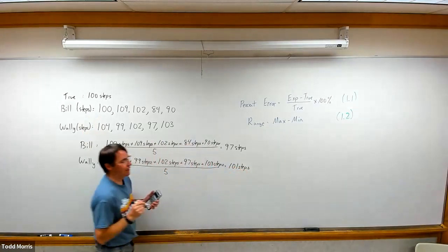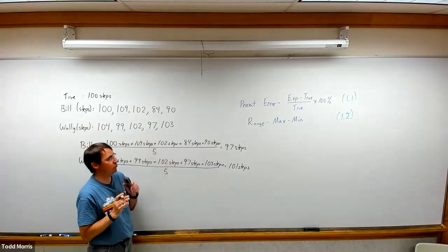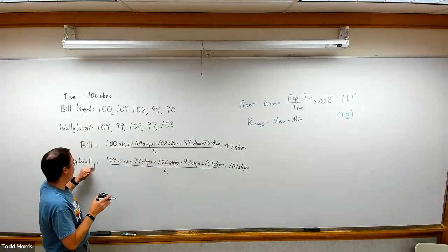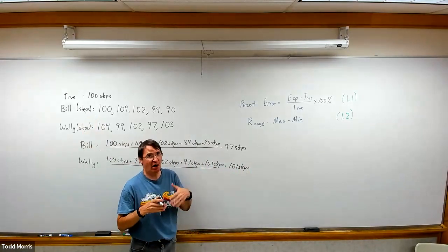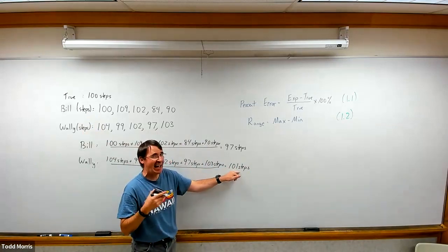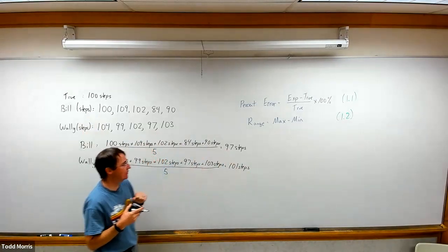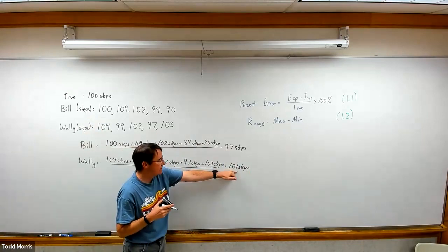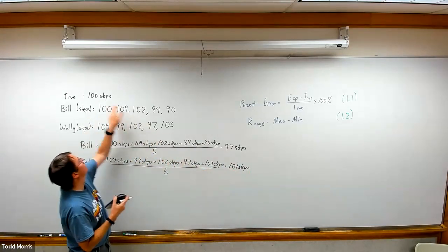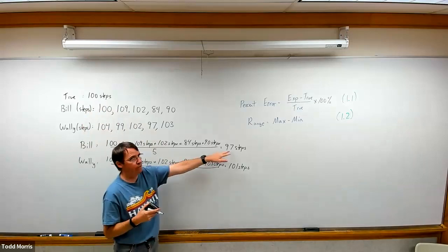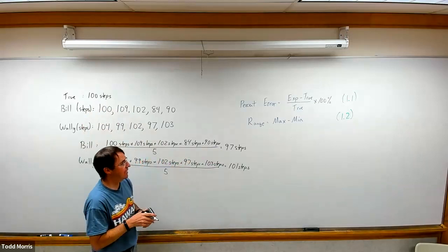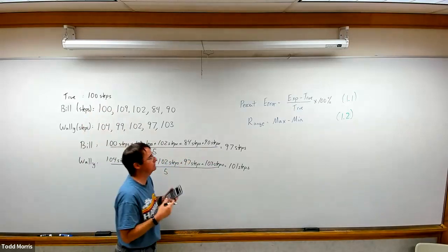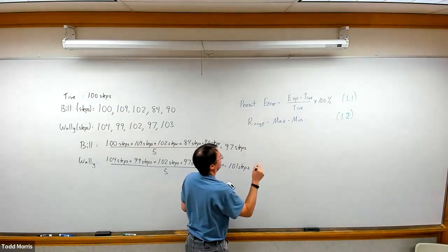We can see that without even going any further with equation 1.1, Wally's fitness tracker seems to be on average more accurate than Bill's because, on average, his number of steps was closer to the true number compared to Bill's. But to actually quantify it, actually put a number to it, we need to find the percent error values.